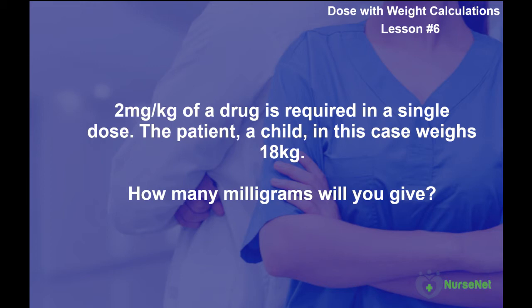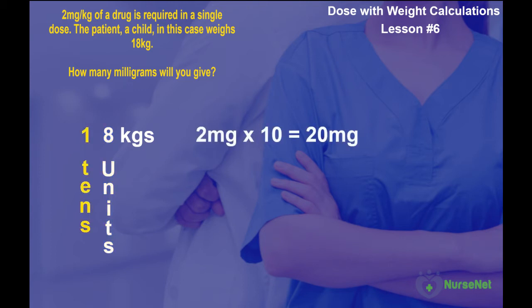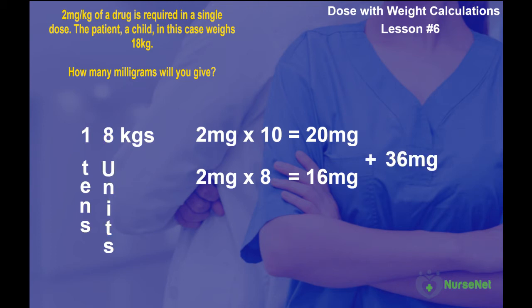We'll need to break this calculation down. Our formula is prescribed dose per kilogram multiplied by total patient weight. We can break the number down by place value. The child weighs 18 kilograms: a 1 in the tens place and an 8 in the units column. Since the dosage is 2 milligrams per kilogram, we multiply 2 by 10 to give 20, then 2 by 8, which gives 16. Adding them together gives our answer of 36 milligrams.